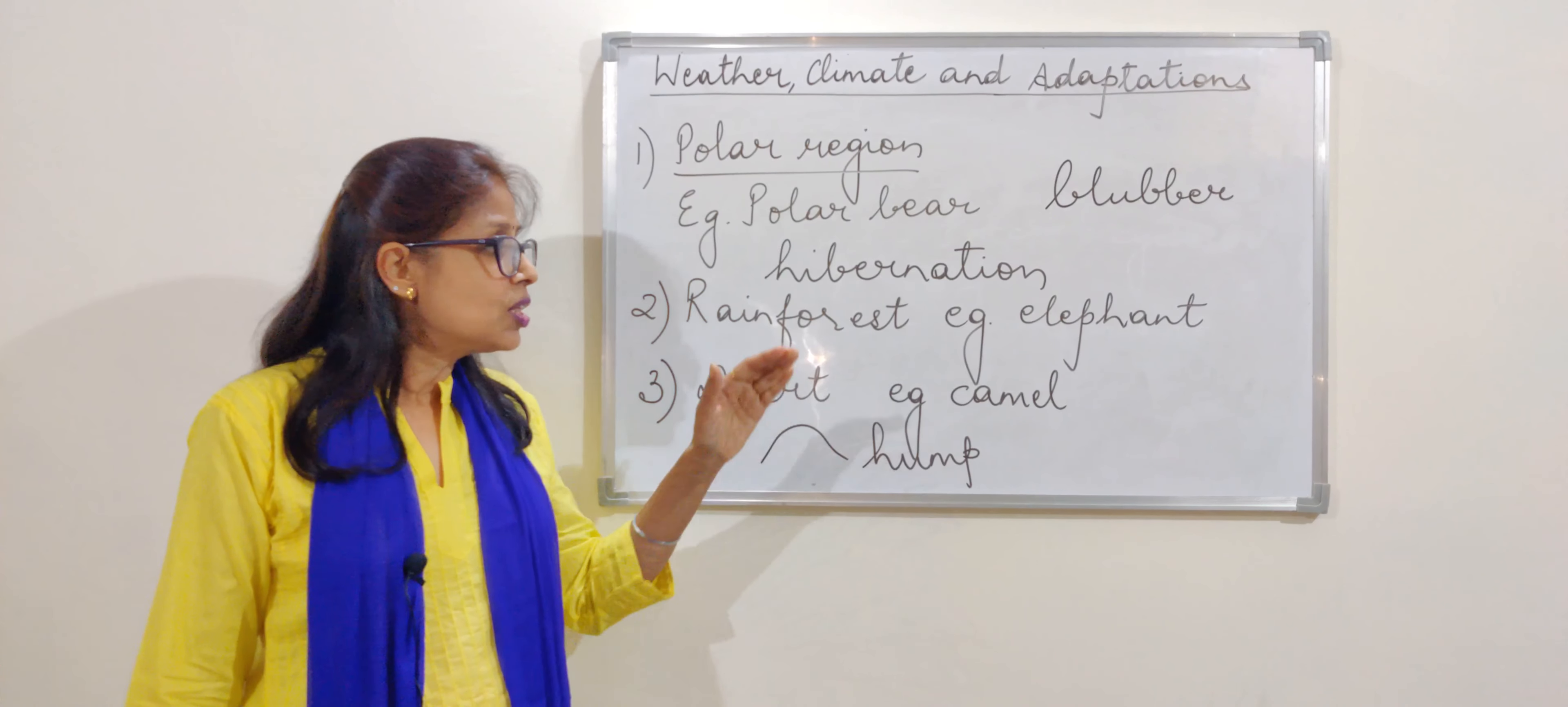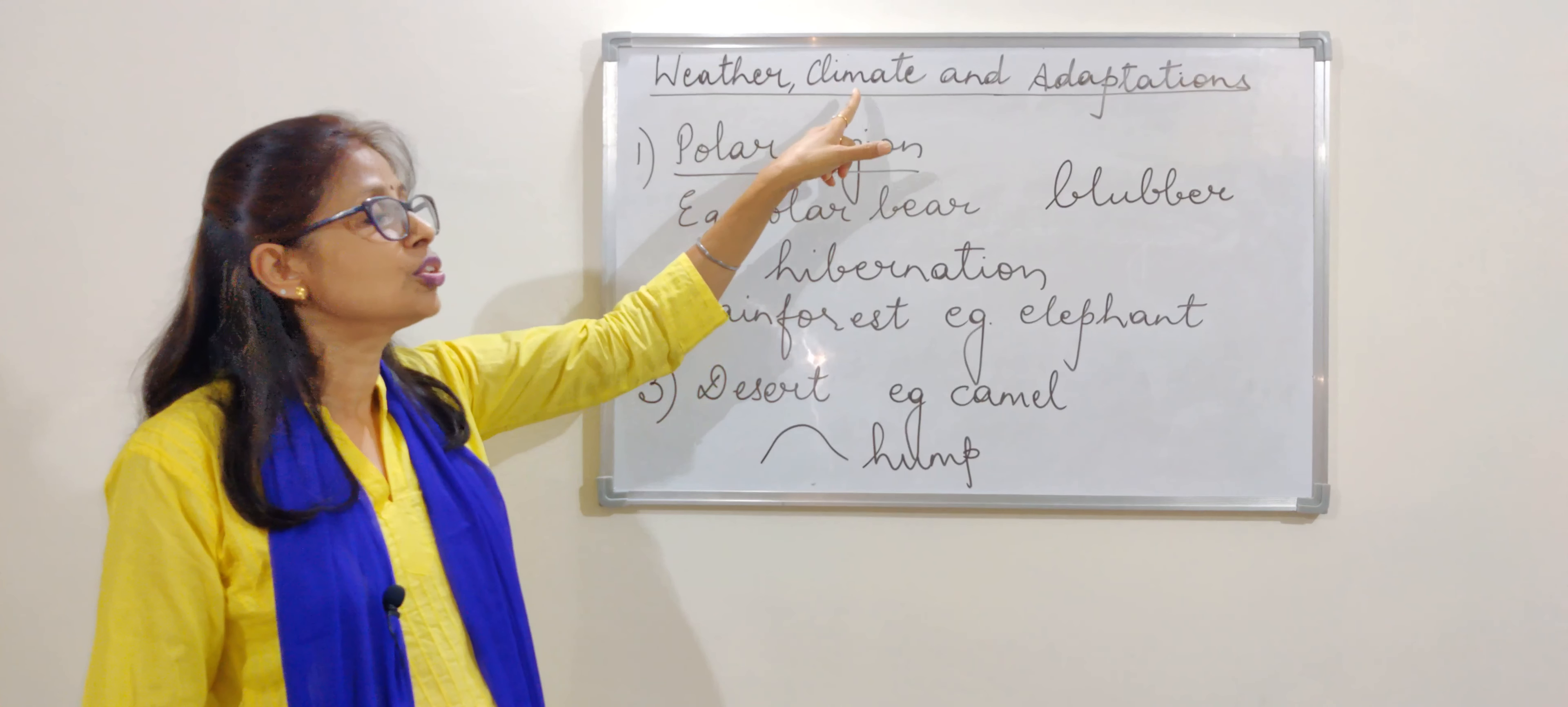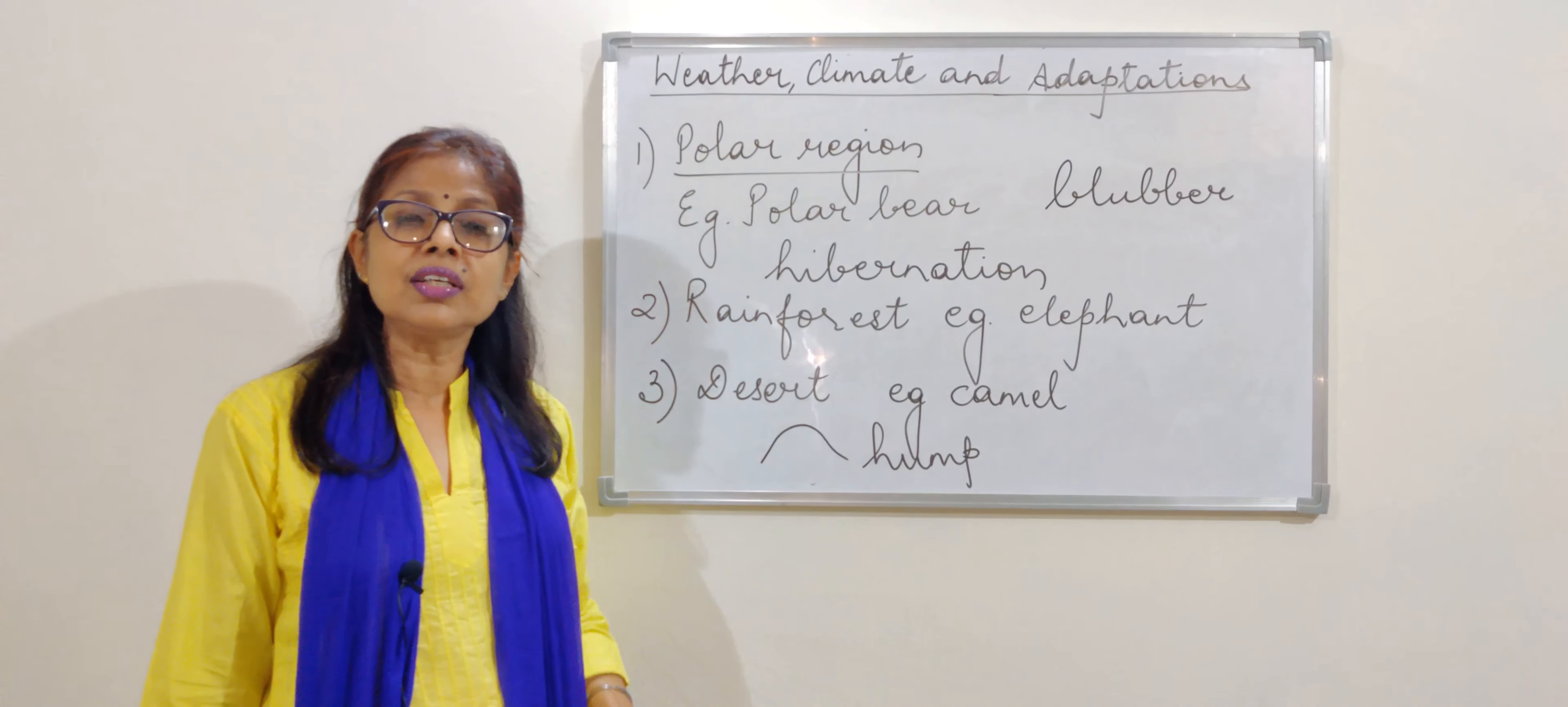So these are some of the adaptations that we find in the three regions and all these adaptations are because of the climate of the place. And how is the climate dependent? Climate is dependent on the weather.